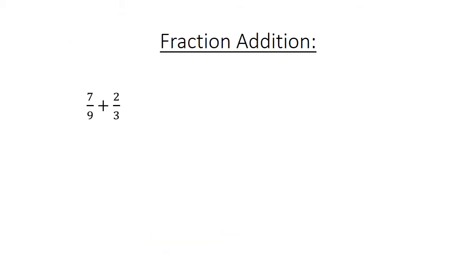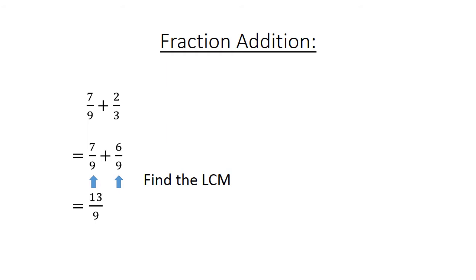Fraction addition. 7 over 9 plus 2 over 3 equals. Find the lowest common multiple. 7 over 9 plus 6 over 9 equals 13 over 9, which equals 1 and 4 over 9.